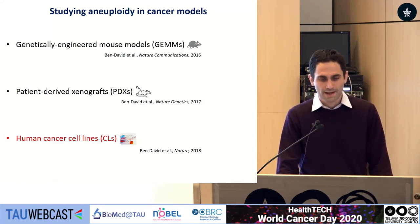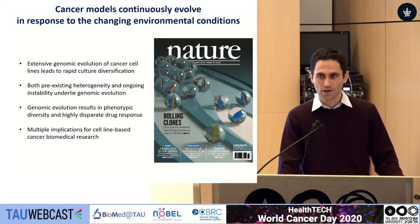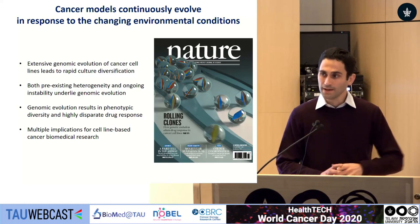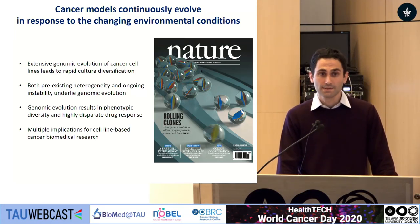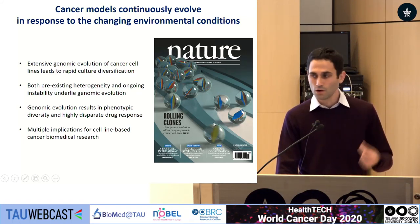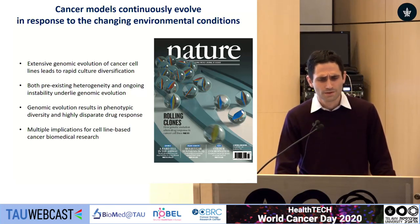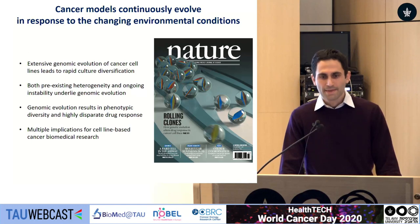We then turned to human cancer cell lines, the workhorse of cancer research. To make a long story short, we found that cancer models continuously evolve in response to changing environmental conditions — there is extensive genomic evolution, including aneuploidy evolution, when we grow the same cell line in different labs or even in the same lab over time. This leads to phenotypic diversity and ultimately very different drug responses of the same cell line cultured in different labs. We can think of it like marbles going down evolutionary trajectories — from a bird's eye view they look similar, but zooming in, some become more blue and some more yellow, representing the clonal composition of the cell lines. Importantly, we can identify genetically matched cell lines that differ in the status of specific aneuploidies.